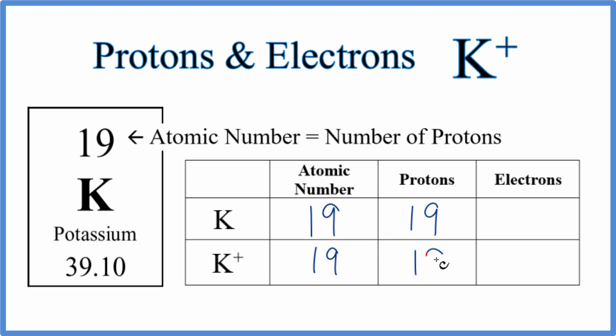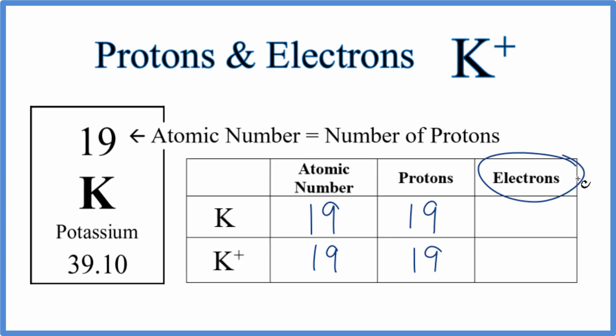That means the number of protons, 19. So this information will be the same. It's the electrons that are going to be different for ions.